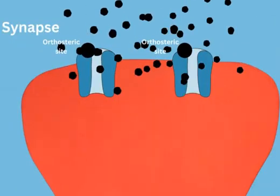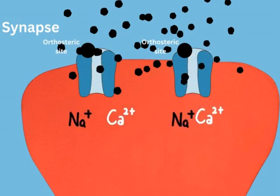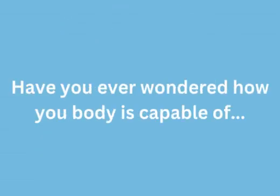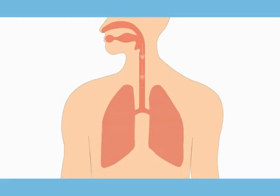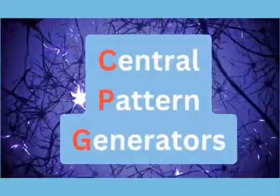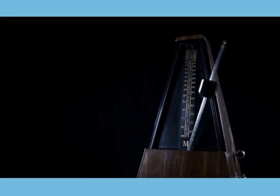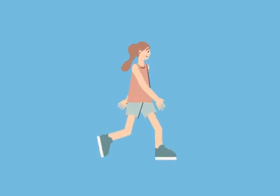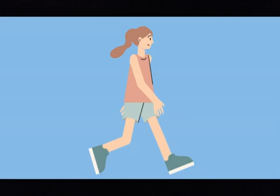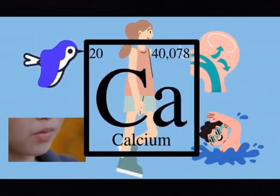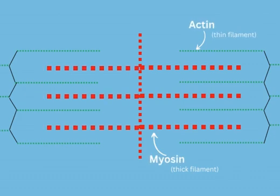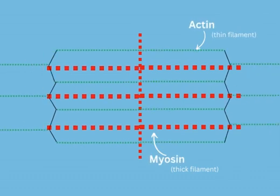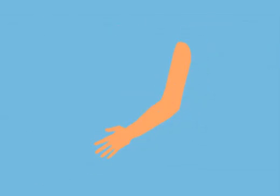The neurotransmitters bind to post-synaptic receptors, resulting in downstream effects. Have you ever wondered how your body seamlessly carries out everyday functions like walking, chewing, and breathing? These functions are carried out by special circuits of neurons called central pattern generators, or CPGs. CPGs are capable of carrying out rhythmic, repetitive behaviors without any additional brain or sensory inputs. The basic movements produced by CPGs require calcium. During any type of muscle contraction, the entrance of calcium into the cell initiates the sliding of actin and myosin filaments, which make up a sarcomere. The combined force of thousands of sarcomeres allows for muscle contraction.